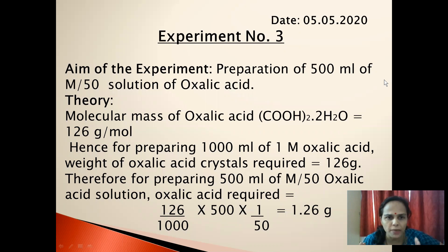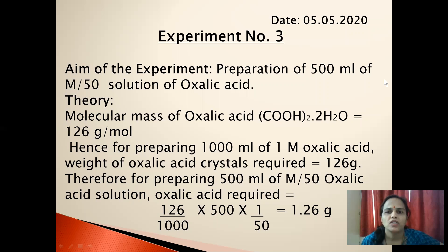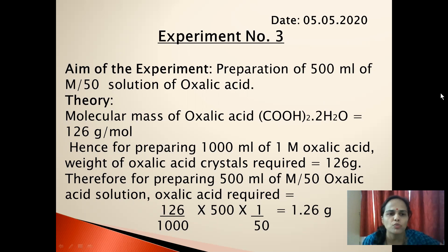In the theory section, write the molecular mass of oxalic acid. Oxalic acid has a molecular formula of (COOH)₂·2H₂O and its molecular mass comes out to be 126 grams per mole.